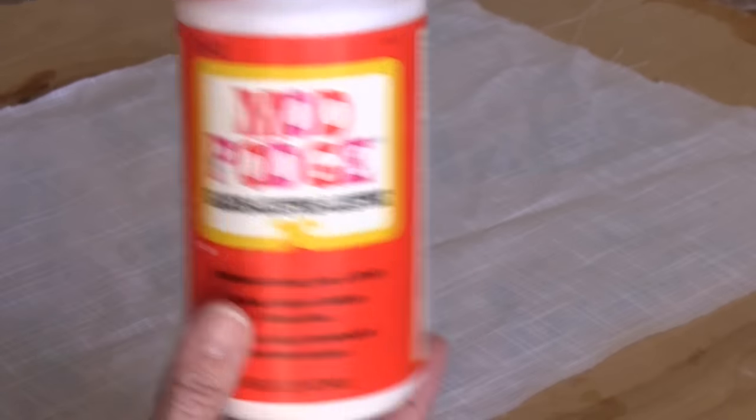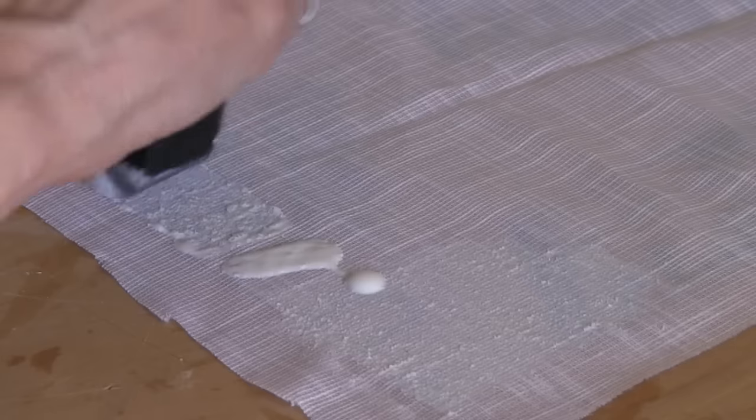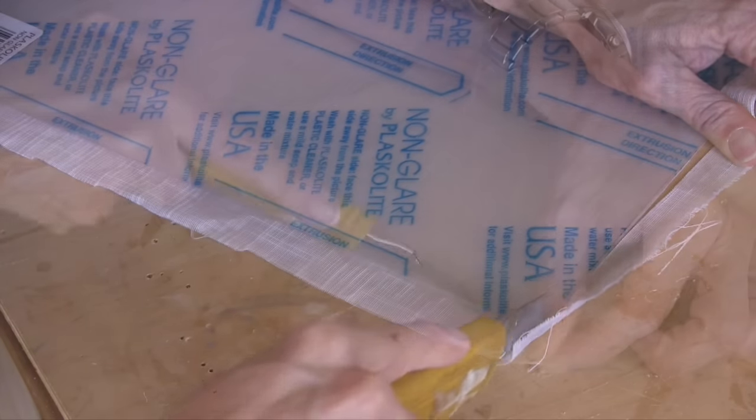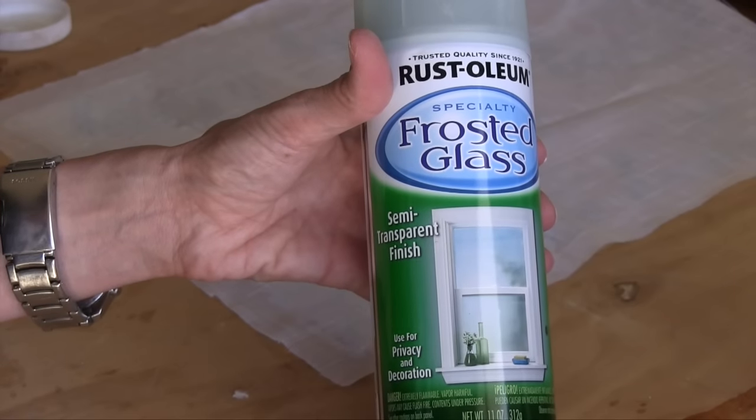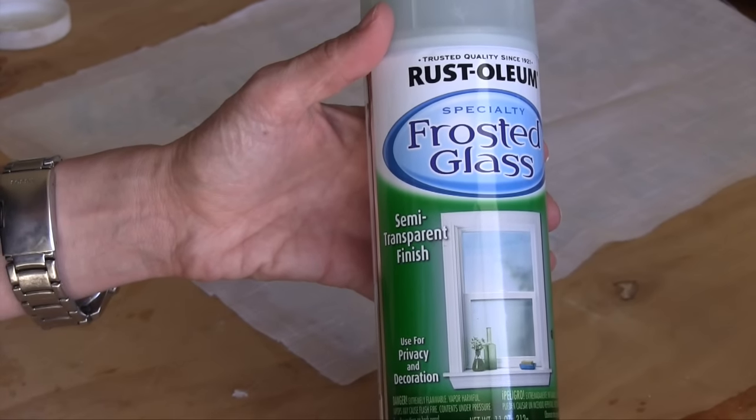To do that, I brushed on Mod Podge onto the fabric to completely soak it, and then I let it dry before cutting off the excess fabric on the sides using a utility knife. You could also use spray instead of cloth to achieve the same frosted effect.